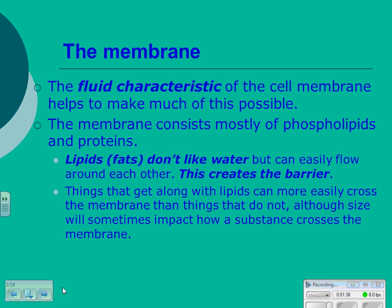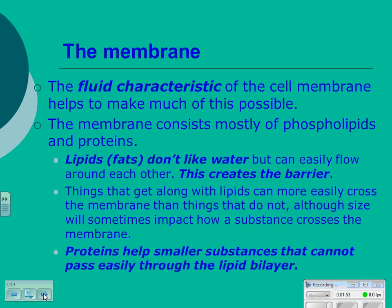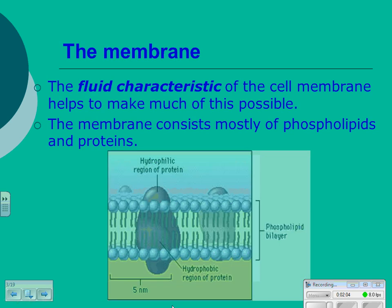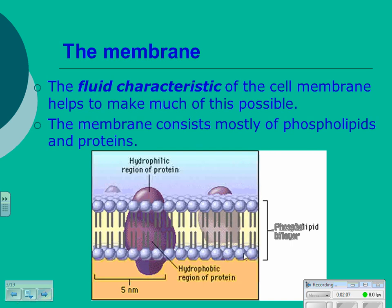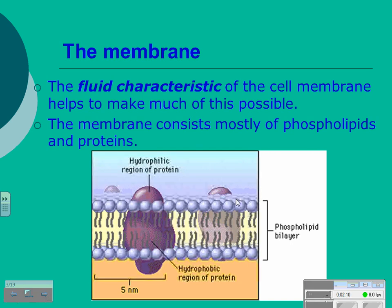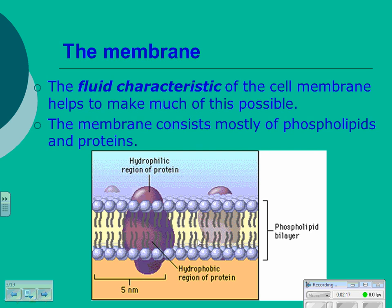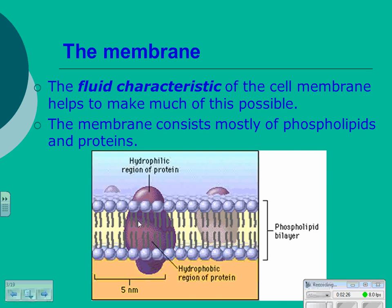Things that get along with lipids can move easily across the membrane, and things that do not — although size sometimes impacts this — will not be able to cross the membrane. Proteins will help some smaller substances that cannot pass easily through the lipid bilayer to cross. They have little protein channels as gateways. The little phospholipids have hydrophilic heads that face the water inside and outside the cell, and hydrophobic tails that face each other in the middle. There are also proteins that cross the barrier, proteins only on the surface, and proteins that are only internal.